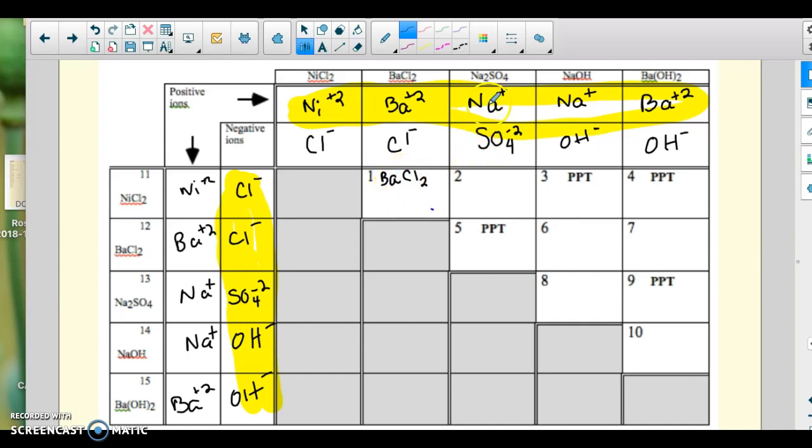Then here I'm going to put sodium with the chloride also. So the formula would be NaCl. Here I'm going to have, again, sodium with that chloride. And then in this box I'm going to have barium with chloride again.